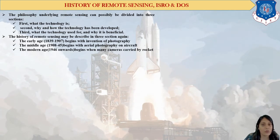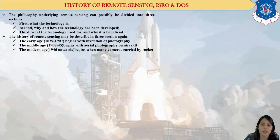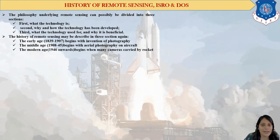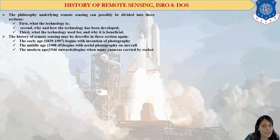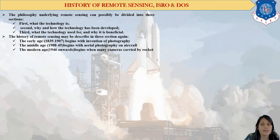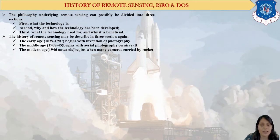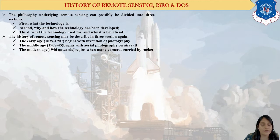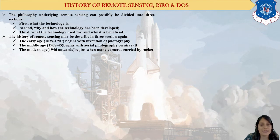The philosophy of remote sensing is possibly divided into three sections. The very first is what the technology is — sensors are somewhere in a remote place. Second, why and how the technology has been developed, which is very important for our nation and has gained a lot of importance in the defense sector. Third, what the technology is used for and why it is beneficial to us.